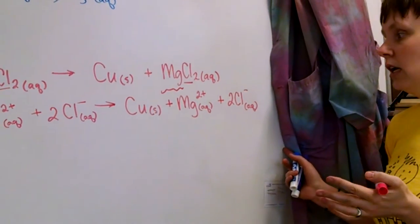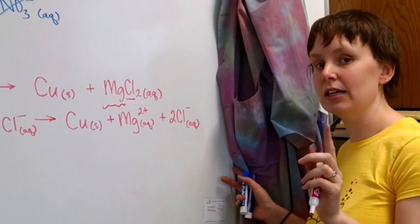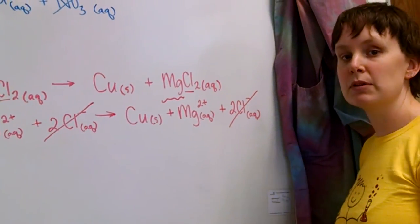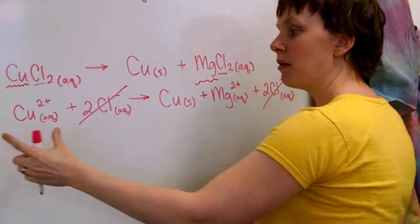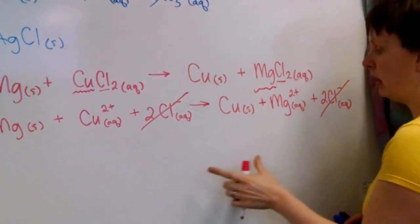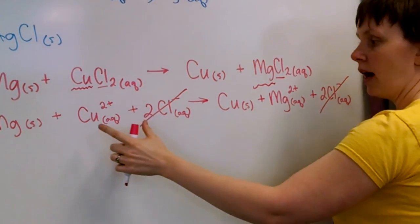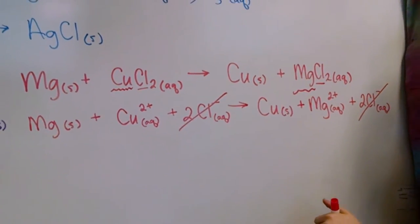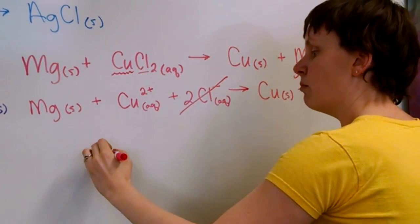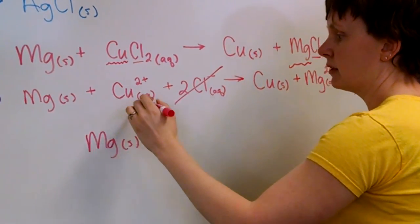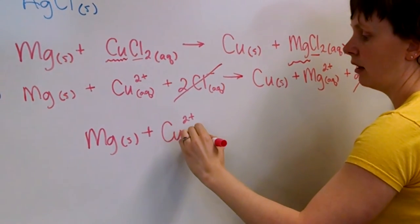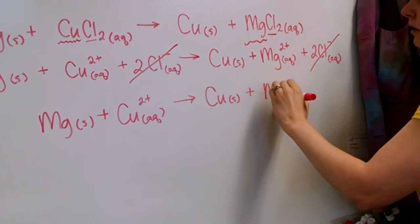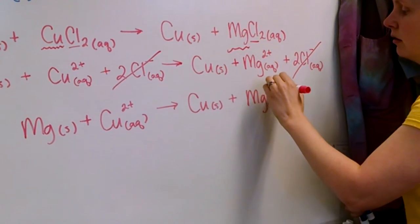Now if we look at this, only one of our ions did not change — we've got two chlorides on both sides. It's floating around in the water; nothing happened to it, it's still aqueous, nothing changed. Whereas magnesium changed from being a metal to being an ion floating in solution, and copper changed from being an ion in solution to a metal. Those are the things that changed. That's what we copy into our net ionic equation: magnesium solid plus copper ions aqueous will produce solid copper and magnesium ions aqueous.